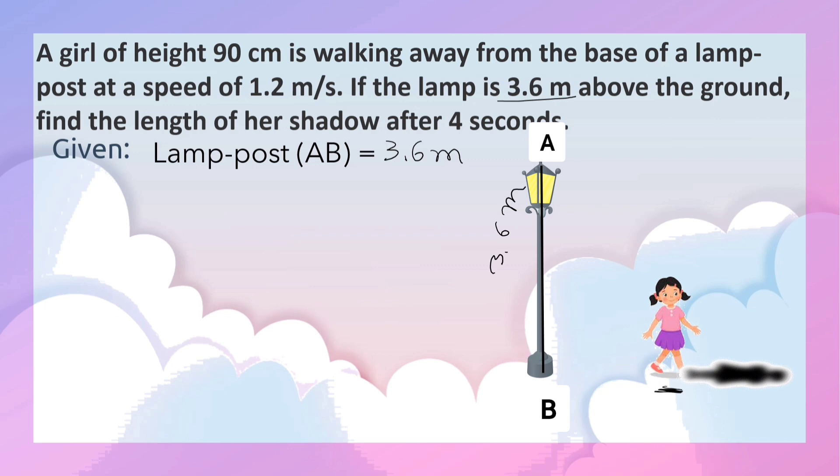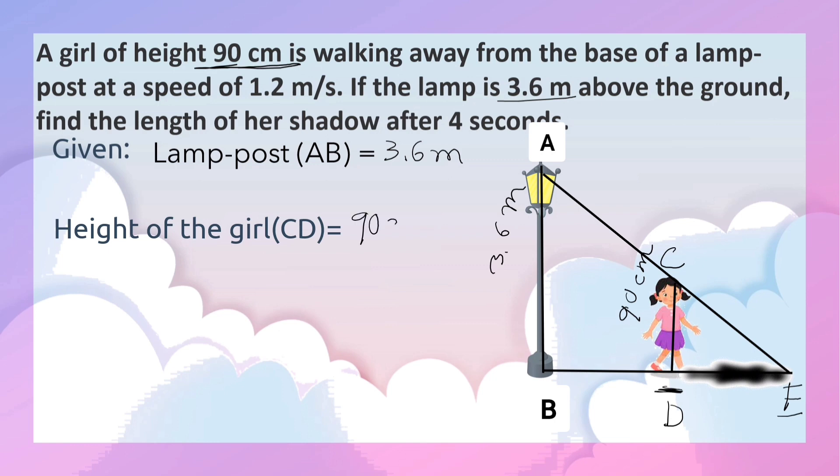We are also given the height of the girl. Let the girl's height be represented by point CD. Before that, let us join all the required points like this. The height of the girl CD is equal to 90 cm. Now we have to convert it into meters. That is equal to 0.9 meters.